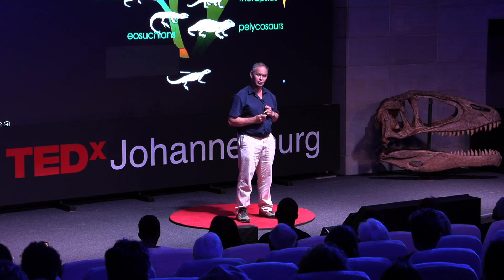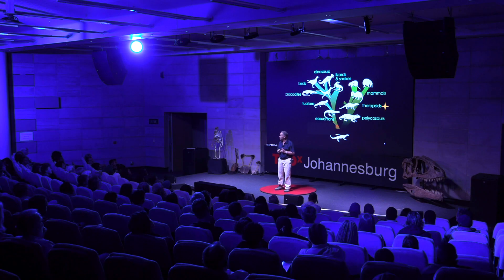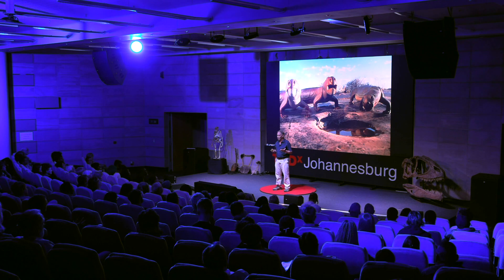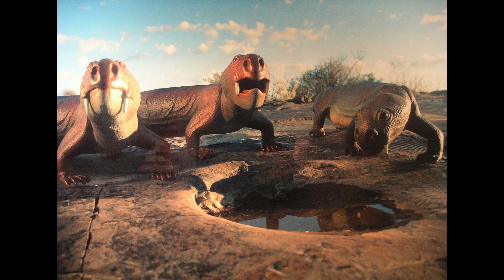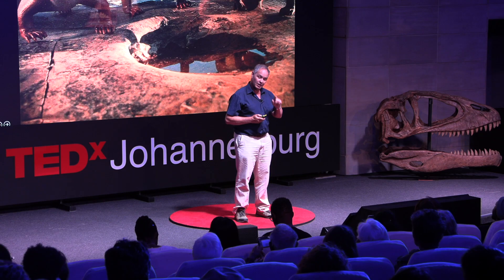I want to talk particularly about the therapsids on the line leading towards mammals, because this group is particularly well represented in the rocks of the Karoo. In the oldest rocks we find very primitive therapsids, and as you go into younger and younger rocks they become more and more like mammals. The most abundant therapsids were the dicynodonts, which came in forms ranging from the size of a meerkat up to the size of a large rhinoceros.